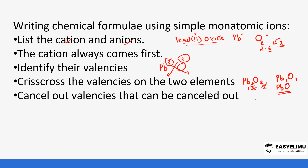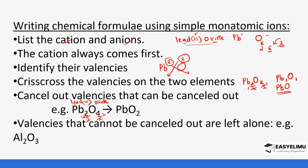There are cases where you can have more than two, for example lead(IV) oxide. When you crisscross the valencies you had two and four. You can cancel out by dividing both by two to get one and two. So the formula is Pb O2. There are also some that cannot be cancelled out - if they cannot be cancelled out, you leave them alone.